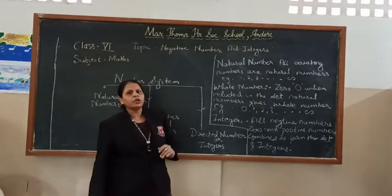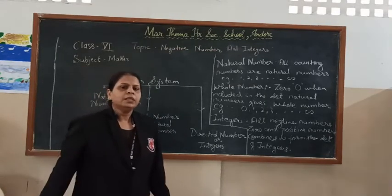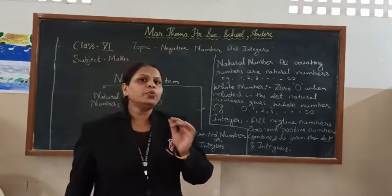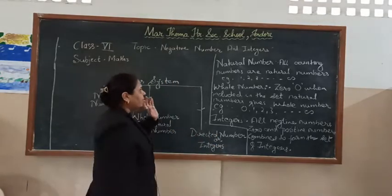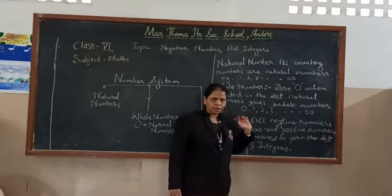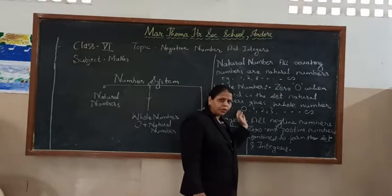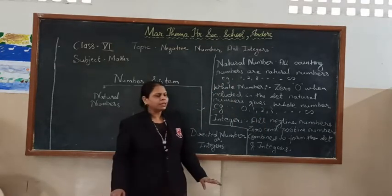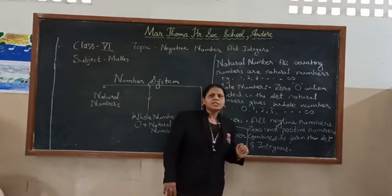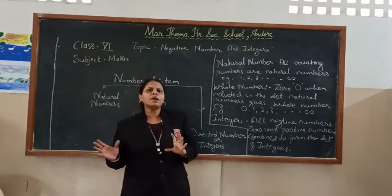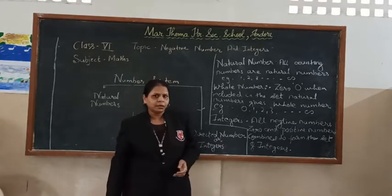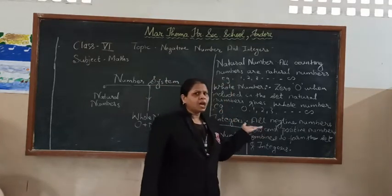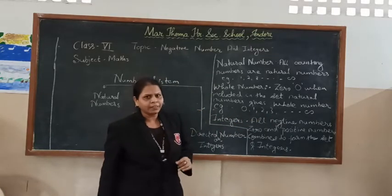Now, when talking about integers, before starting the topic I would like to introduce one new type of number. We have seen that natural numbers are 1, 2, 3, 4 up to infinity, and whole numbers include zero plus all natural numbers. But in day-to-day life, it is not always possible that we get only positive numbers. Suppose we want to subtract a bigger number from a smaller number — the result is a negative number. So, before introducing integers, I would like to introduce the negative number.